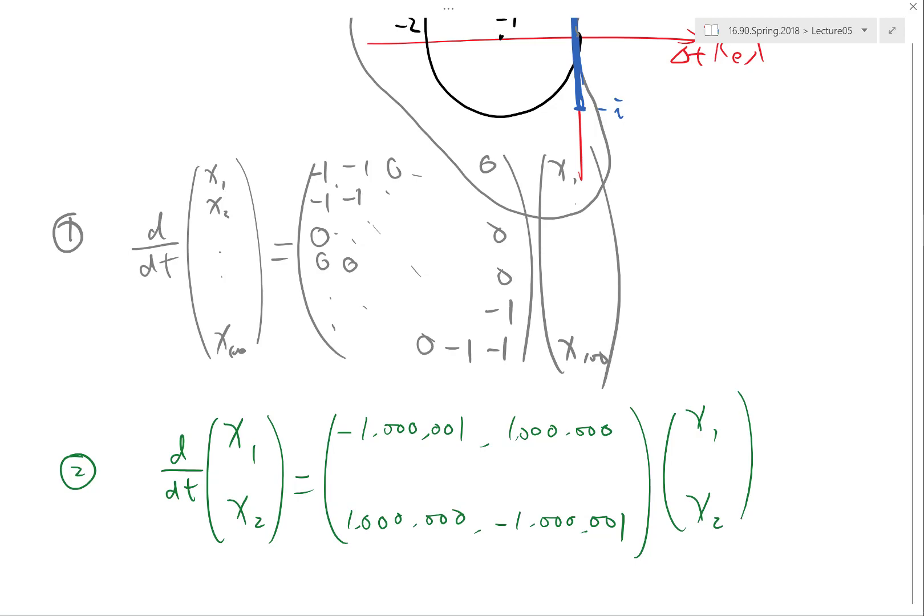Which one do you think is easier to solve numerically? The bottom one is easier to solve. Why is that? Because you only have two equations as opposed to a hundred equations. So the argument is this is easier to solve.